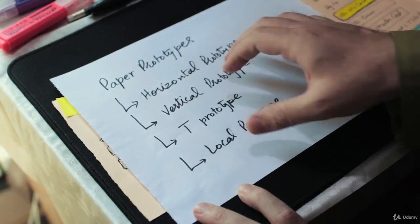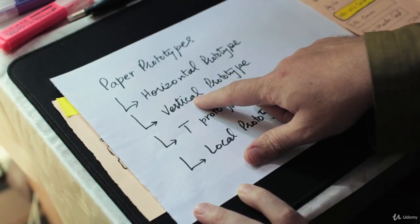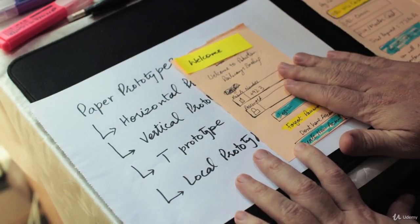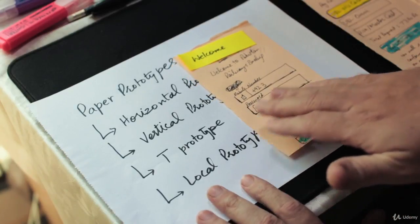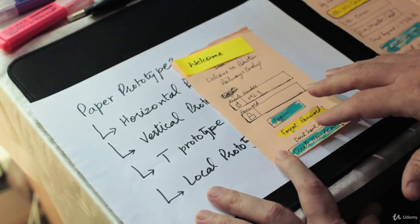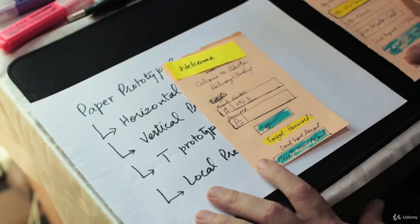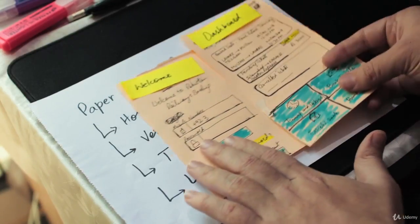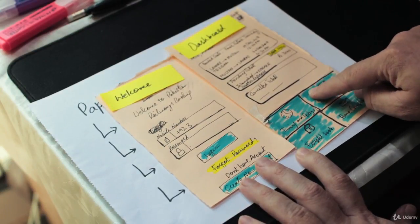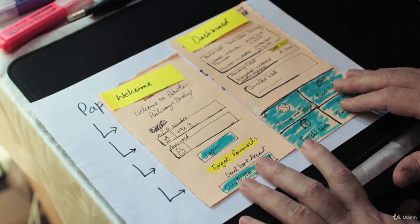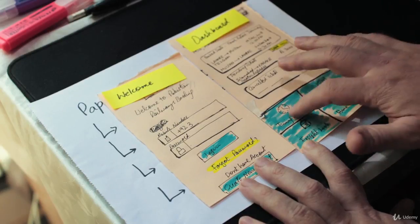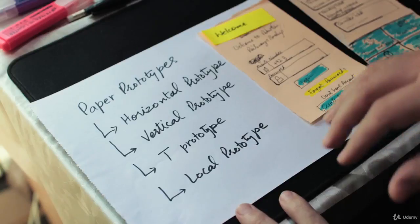Now the T prototype, as the name suggests, mixes horizontal and vertical — this direction is horizontal and this is vertical. For example, using this same train booking app: if I build just the login screen and the sign-up screen, those two screens viewed horizontally make part of the T. But if I also build first screens for three functions and go into depth on only one of them, that is still a T prototype. One feature is tested in depth; others have only one or two screens each.